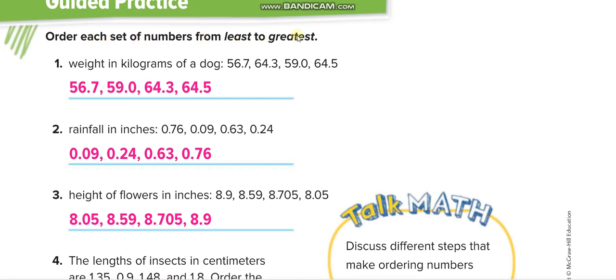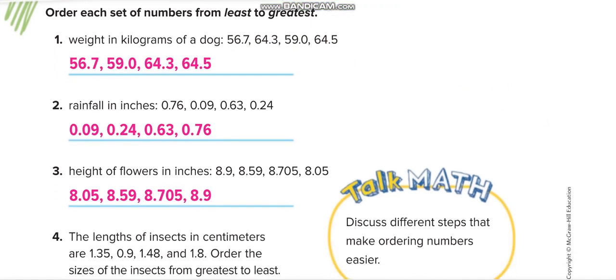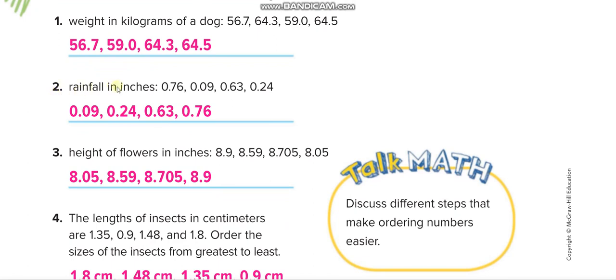In guided practice, order each set of numbers from least to greatest. The first set is: 56, 64, 59, 64 with decimals. So the order from least to greatest is: 56.7, then 59.0, then 64.3, and then 64.5.